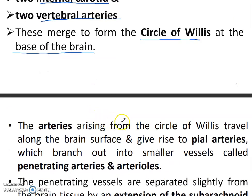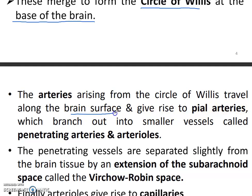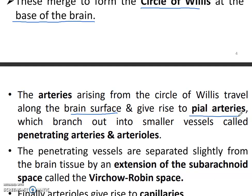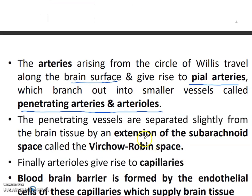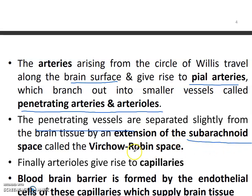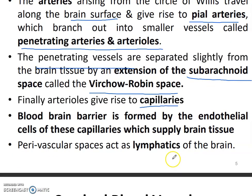The arteries arising from the circle of Willis travel along the brain surface and then give rise to pial arteries. Then they give smaller vessels called penetrating arteries and arterioles. The penetrating vessels are separated from the brain tissue by the extension of the subarachnoid space — the Virchow-Robin space. And then they give rise to the capillaries, forming the blood-brain barrier (BBB).